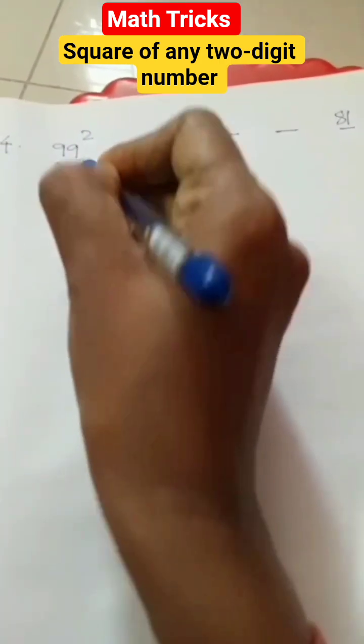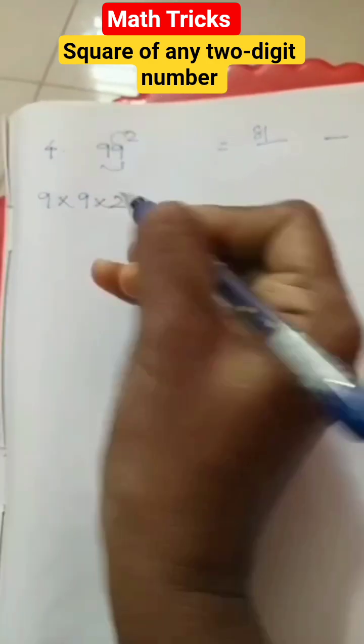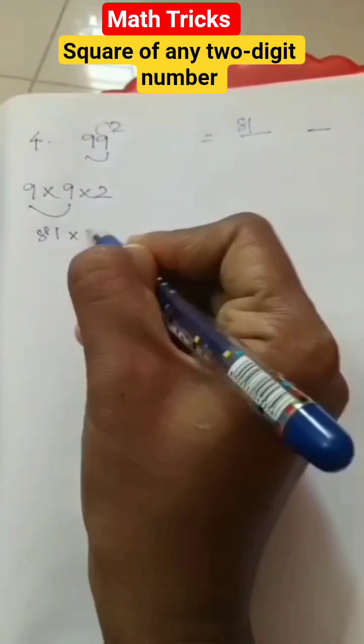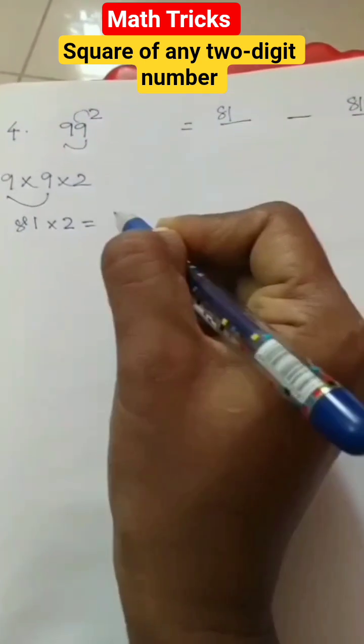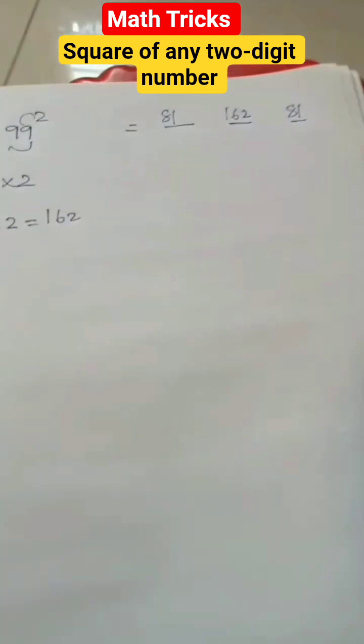Next is 9 into 9 into 2. 9 nines are 81, 81 into 2, 162.